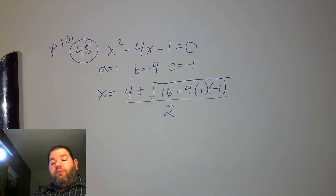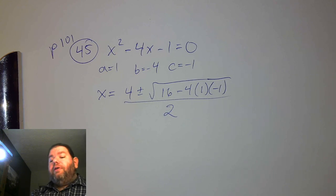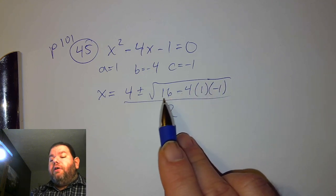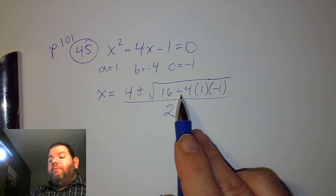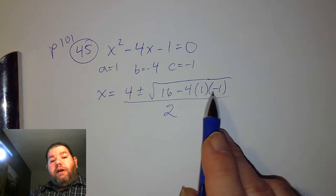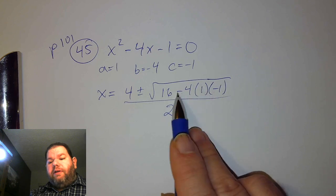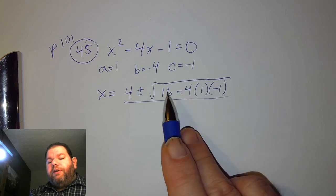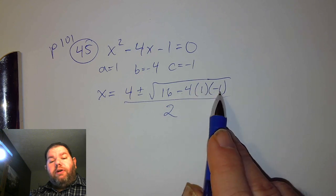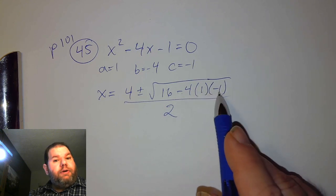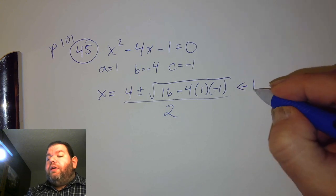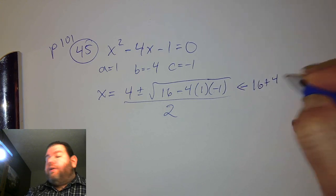We now simplify what is underneath the square root. You'll see that we have two negative signs: 16, minus 4, times 1, times minus 1. The two negative signs are going to make that a positive. So we end up with 16 plus 4 times 1 times 1. 4 times 1 is 4, times 1 again is still 4. So this term is going to be 16 plus 4.